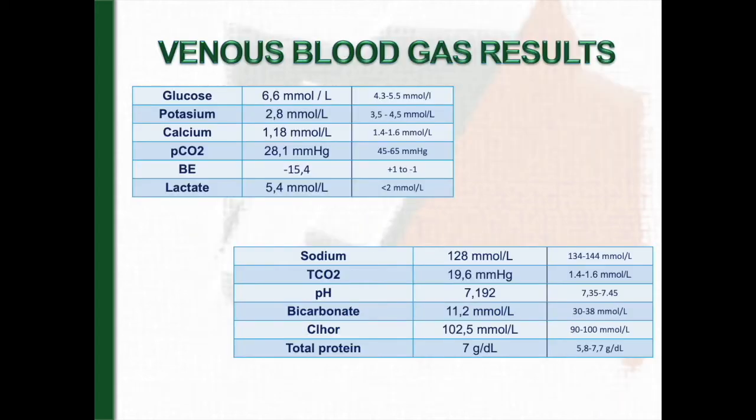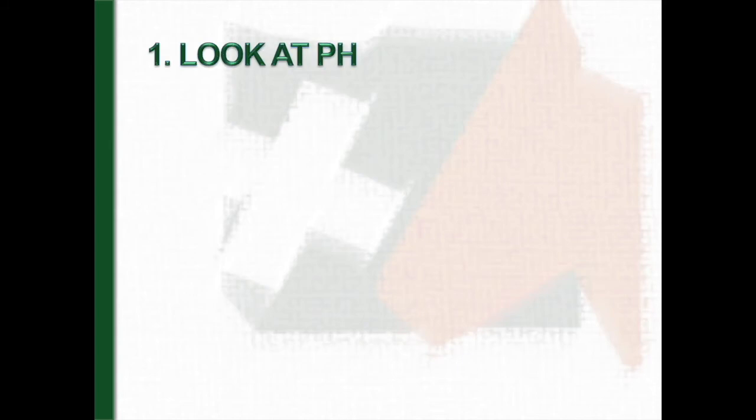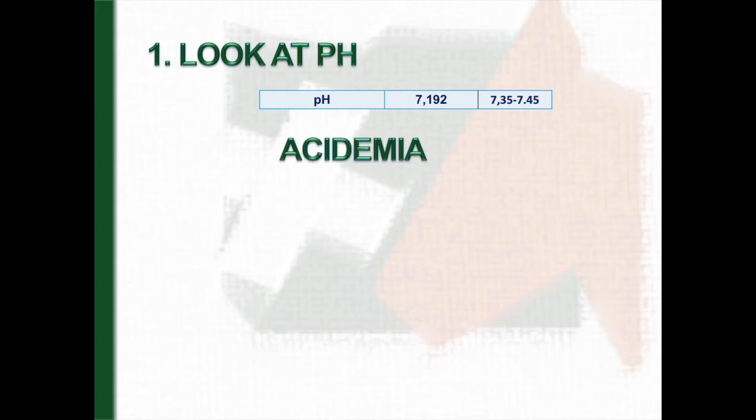And here you can see the results of blood gas analysis. First of all, we are going to check the pH. In this case, the pH was 7.192. This pH is clearly below the normal range, so we can say that Said has marked acidemia.